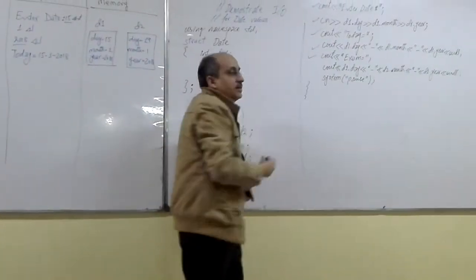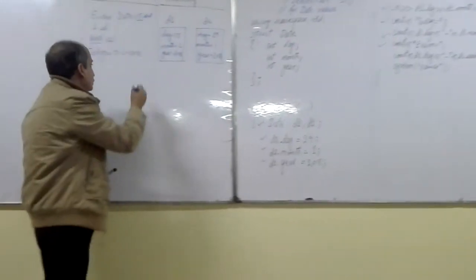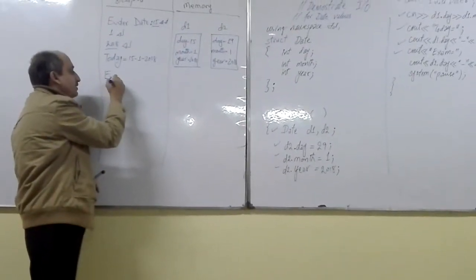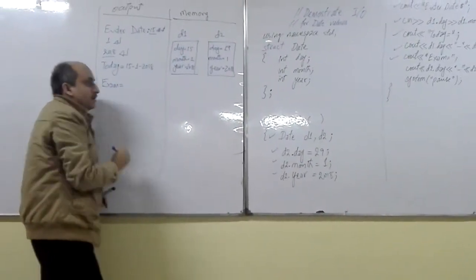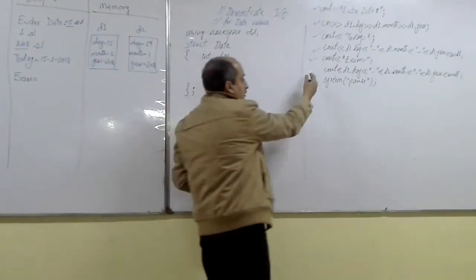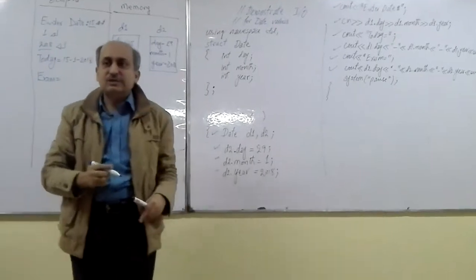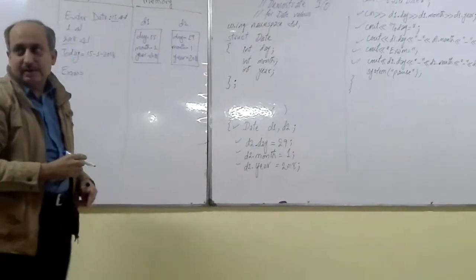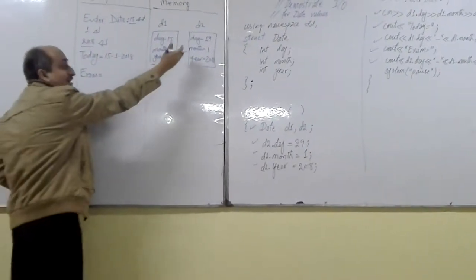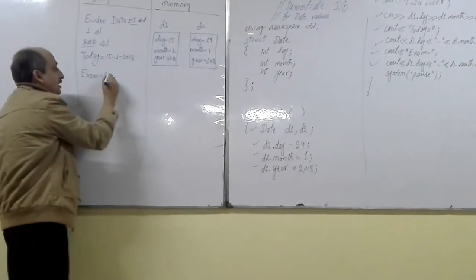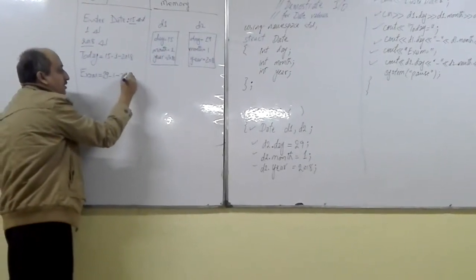In the next statement, exam message is being printed. So a constant message 'exam' will be printed on screen. And in the next statement, attribute values of D2 will be printed with minus symbol in between. And the variable D2 has 29, 1, 2018.